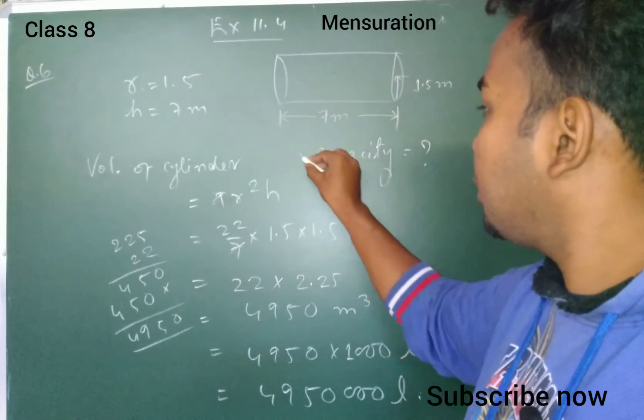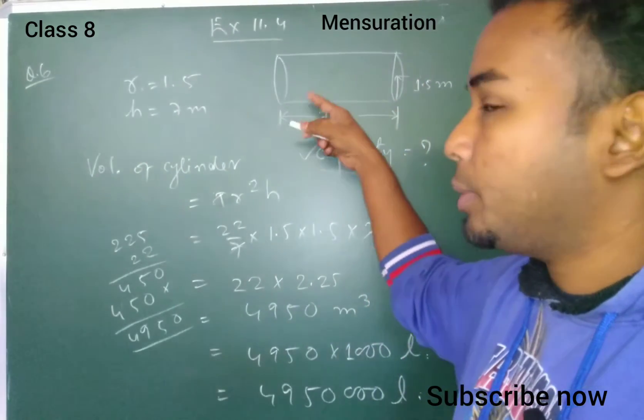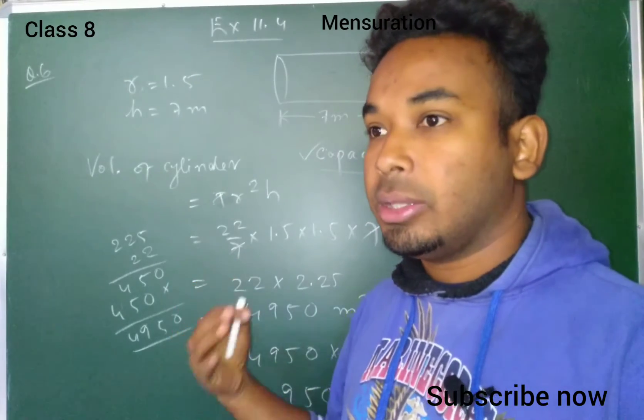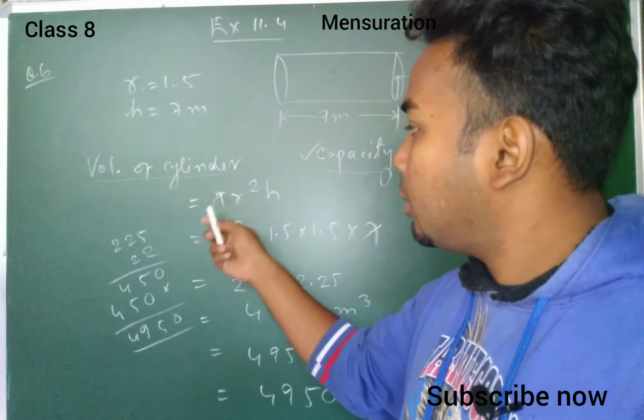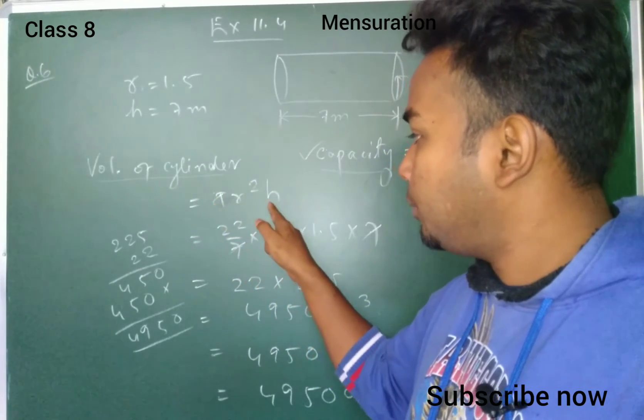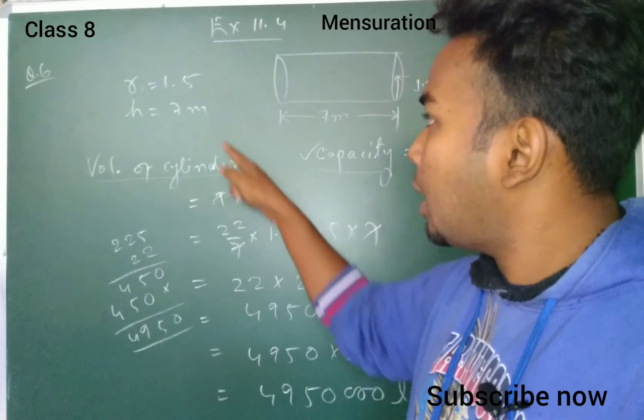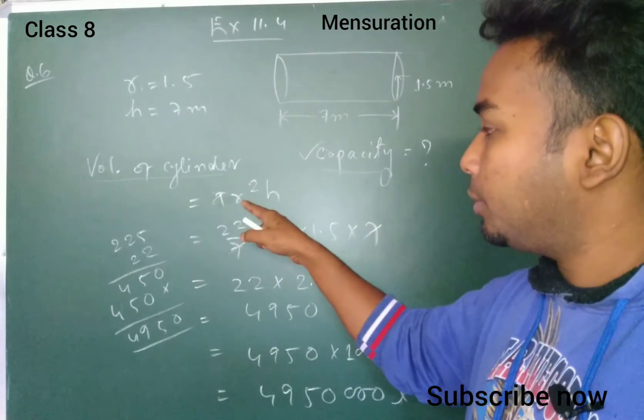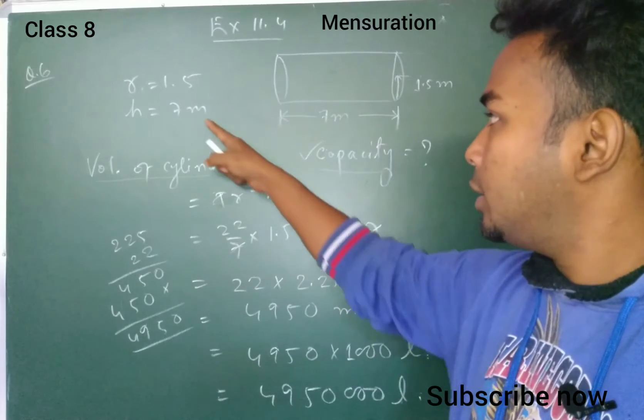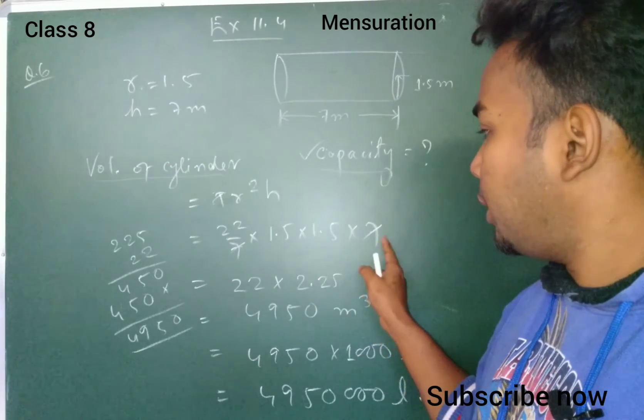We have to find the capacity of this cylinder. Capacity means volume. The volume of a cylinder is πr²h. π means 22/7. R square means 1.5 times 1.5. Then h is 7.